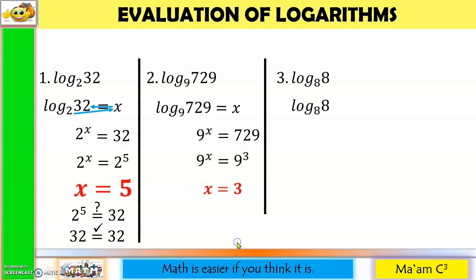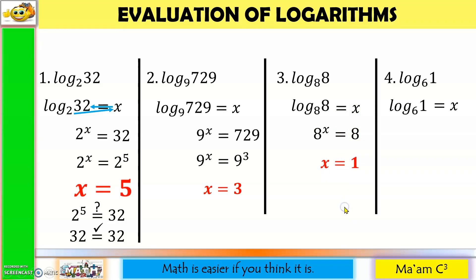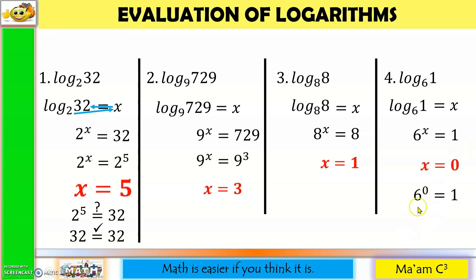Another one: equate to x and convert to exponential. So we have 8 raised to x is equal to 8, and the exponent here is 1, so x equals 1. One more: equate to x, convert to exponential — 6 raised to x equals 1. To what number do you raise 6 to get 1? That is 0, since any number except 0 raised to 0 equals 1. So x equals 0.